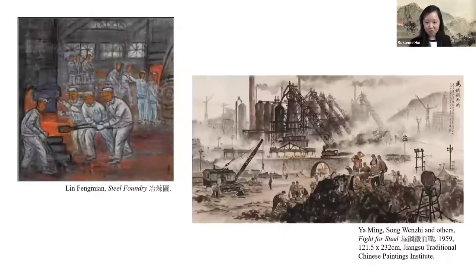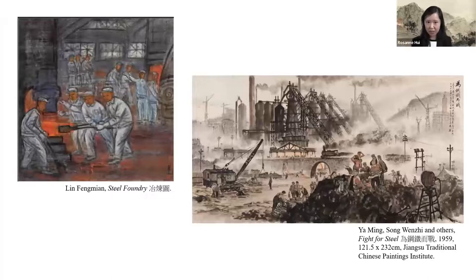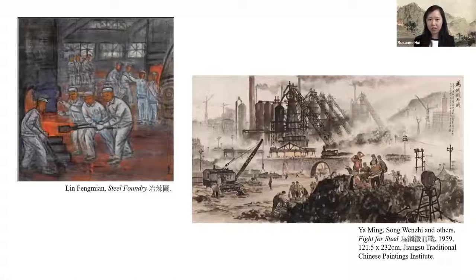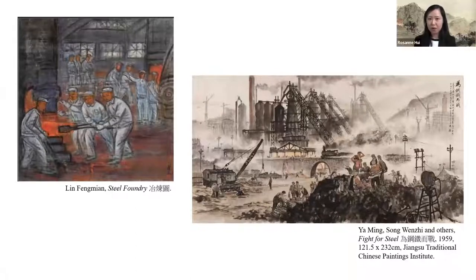Many artists responded to the Central Committee's policy regarding steel production. Lin Fengmian reenacted a similar scene in Steel Foundry. Ya Ming, Song Wenzhi, and others collaborated on Fight for Steel in 1959, combining landscape with figure painting, with relatively enlarged laborers almost hailed as heroes. There's also Qian Songyan, who was asked to make a steel production painting but refused, responding: 'How does one paint a furnace?' Indeed it's not easy — so we have no piece by Qian Songyan on the furnace.